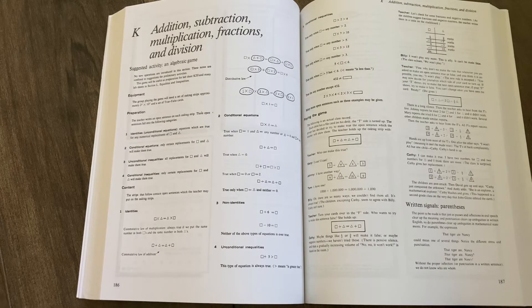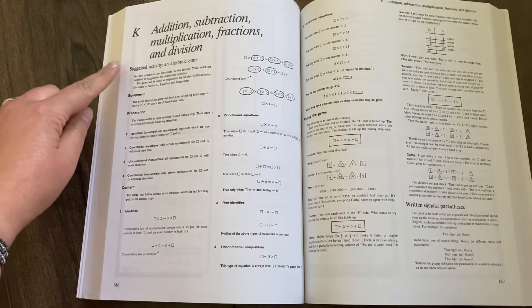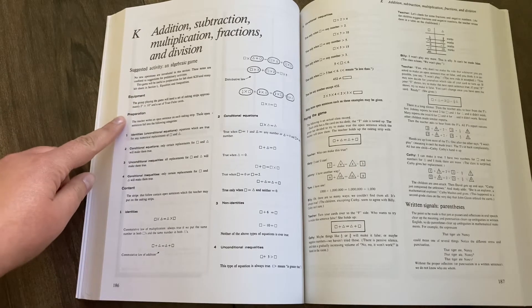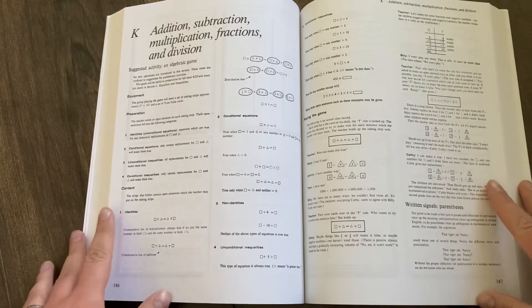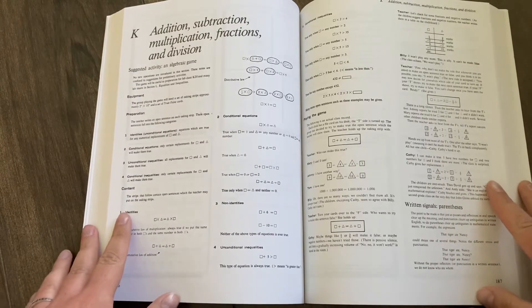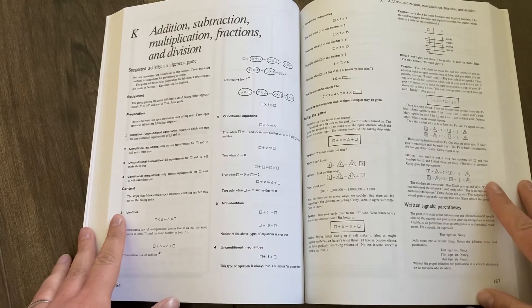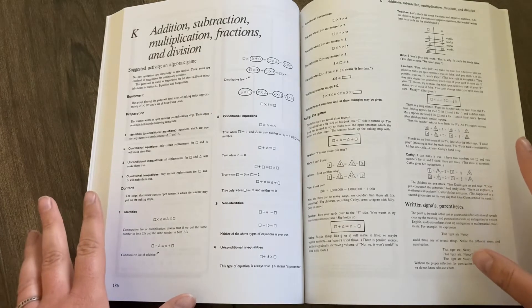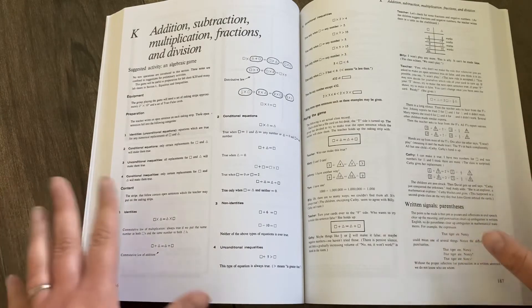One more thing I'd like to show you is that at the beginning of each chapter, it gives you suggested activities, the equipment that you might need, the preparation, different things. The weird thing to me about this is that these are covering multiple books, and you're not doing all of the books at one time—you're doing them one at a time. So I find it incredibly odd that there's so much skipping around.